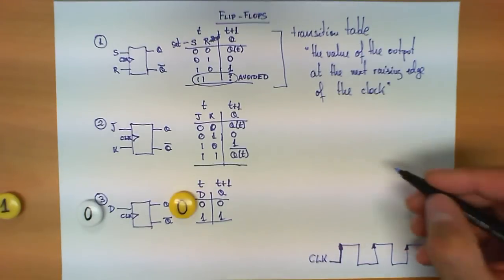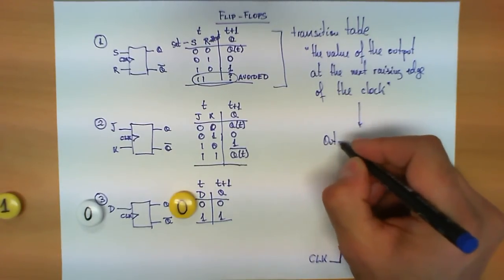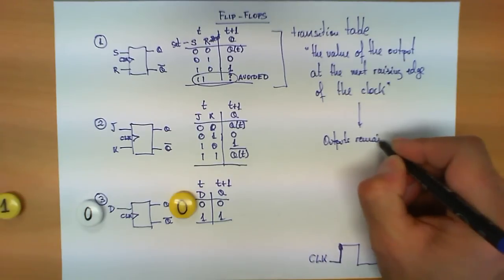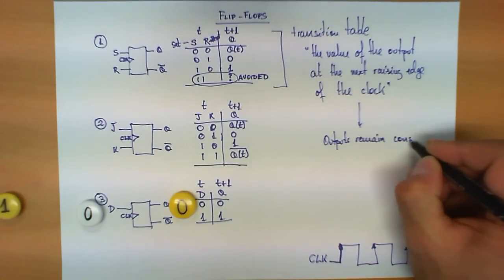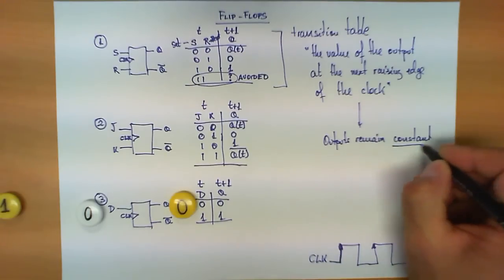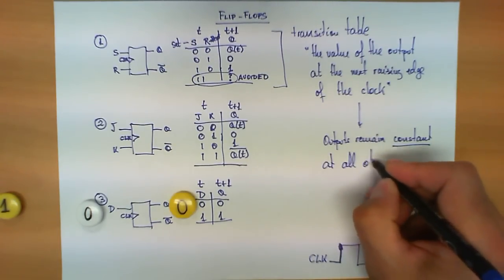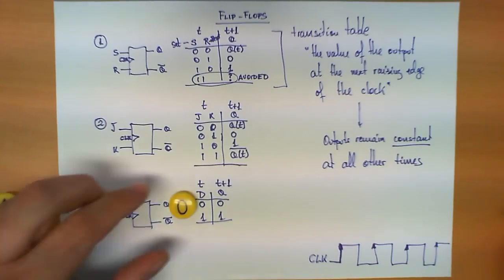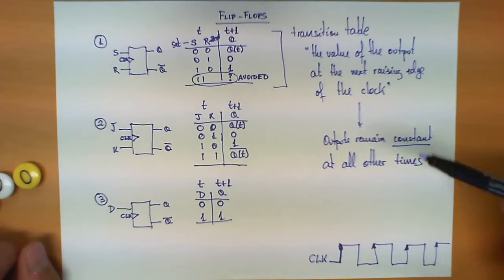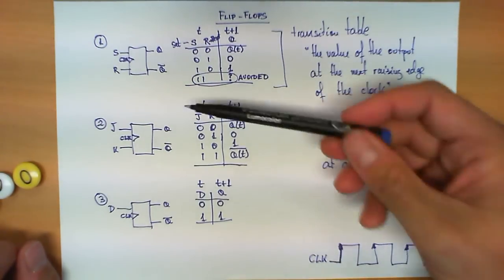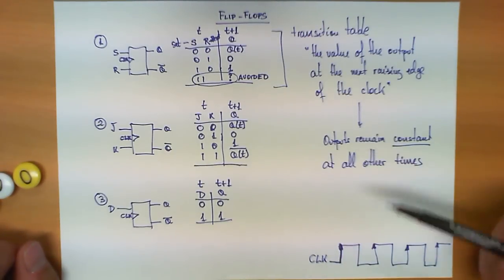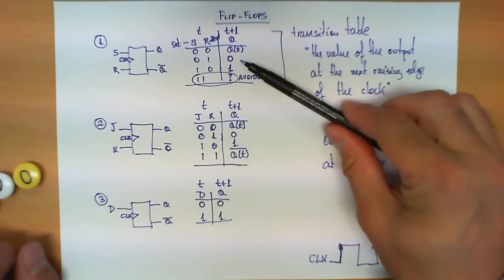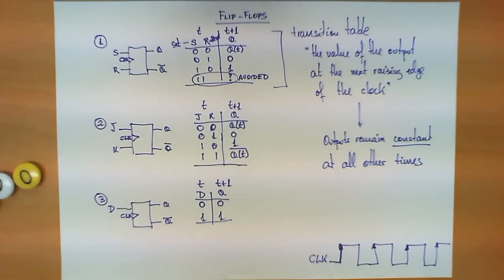Outputs remain constant at all other times. The common property of these three circuits is that transitions in the outputs only occur when there is a rising edge on the clock, and they occur based on the three transition tables depicted.